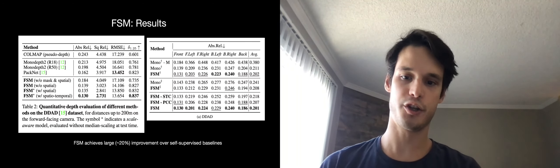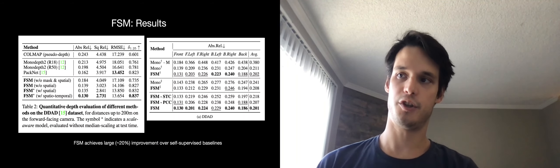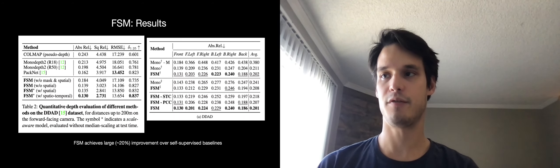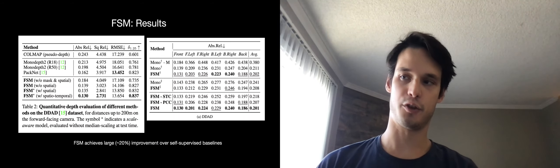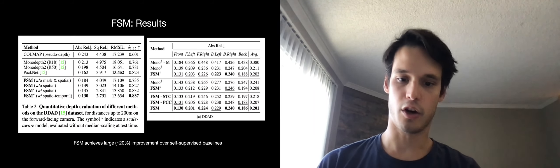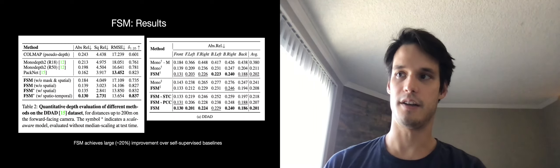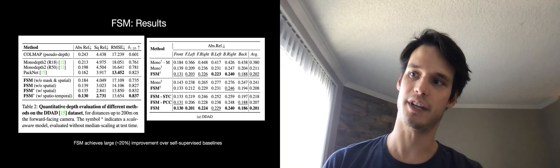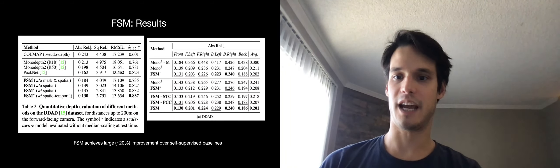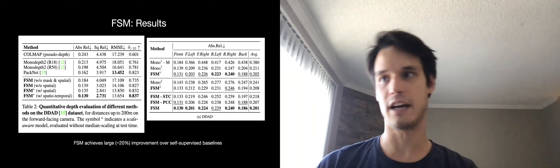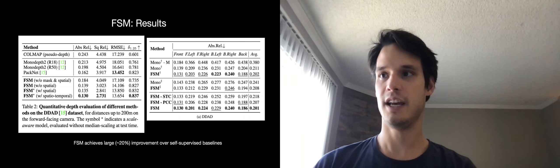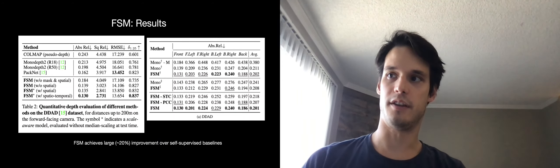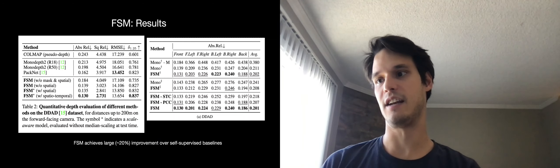Quantitatively, we get a large improvement on the standard KITTI benchmark, which only evaluates on the forward-facing camera. Despite having no new data for the forward-facing camera, training on the full dataset gives us about a 20% improvement over the next best self-supervised baseline. But maybe more importantly, we have dramatic improvements for depth estimation on all the other cameras — those for which naive self-supervised learning without masking and spatio-temporal constraints gives basically unusable depth estimates. Now the metrics are much closer to the forward-facing camera, which is the cleanest data with no self-occlusion.